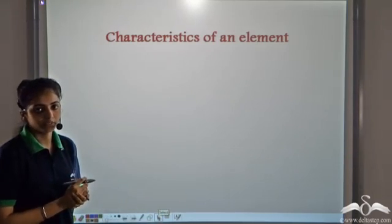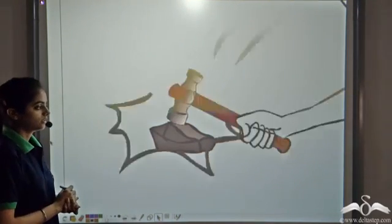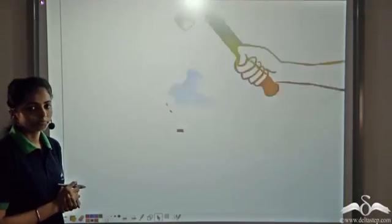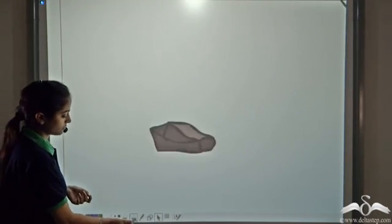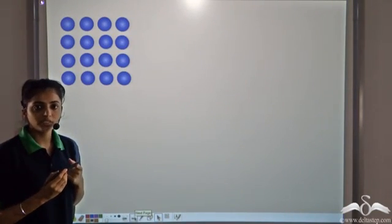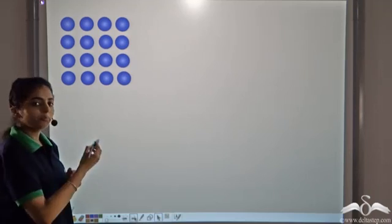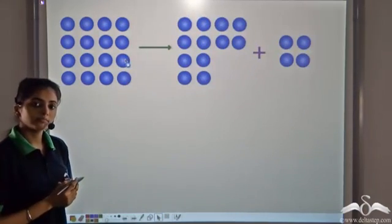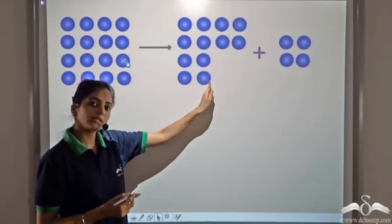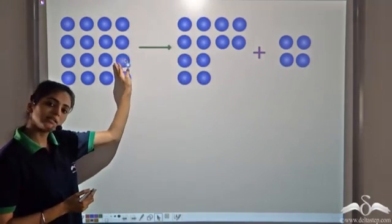Let's look at some characteristics of elements. We have a coal piece — let's break it. As we break it into smaller and smaller pieces, we still get the same coal. An element is a collection of similar atoms, composed of only one kind of atom. If we break this element, it is still made up of the same atoms, and each atom has the same physical and chemical properties.